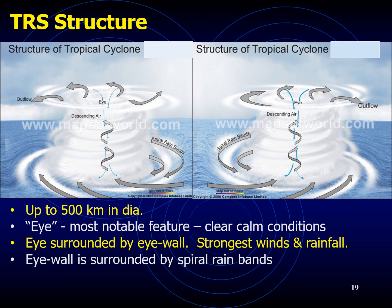Here you can see a typical anatomy of a tropical storm. The eye is in the center of the tropical storm. Next to the eye we also have the eye wall. The eye is up to 500 kilometers in diameter and is the most notable feature with clear, calm conditions. Surrounding the eye, we have the eye wall with the strongest winds and rainfall, and the eye wall is surrounded by spiral rain bands.